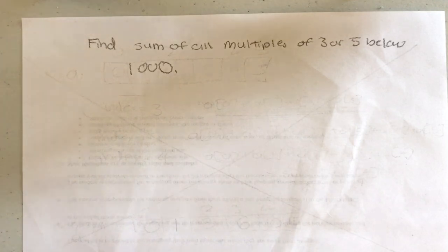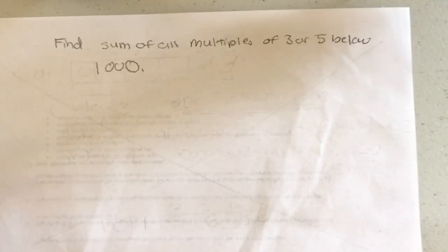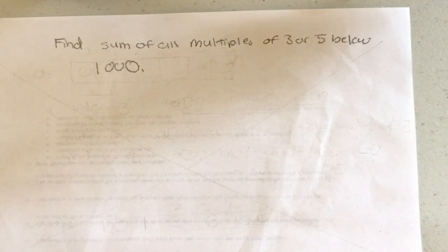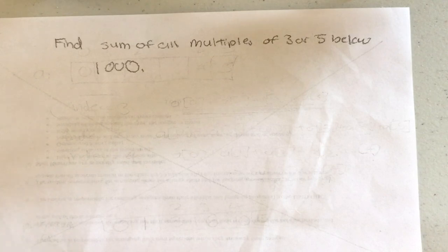So anyway we're going to go over this problem. Basically the problem is: find the sum of all multiples of three or five below 1000. What does this mean?